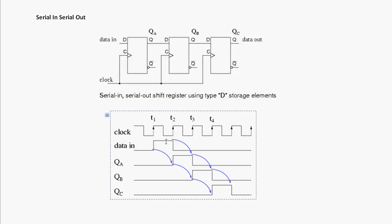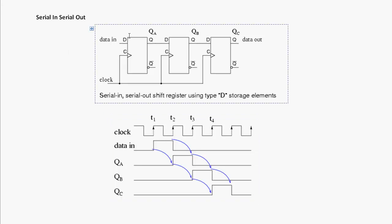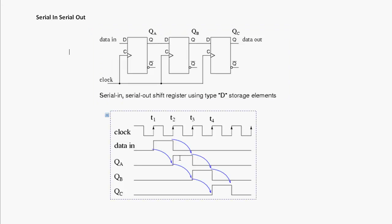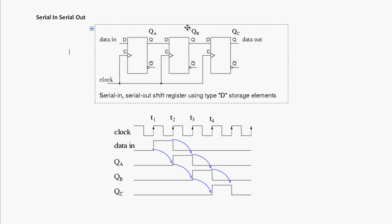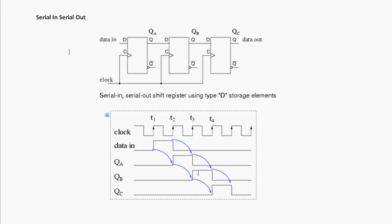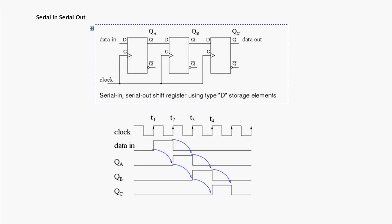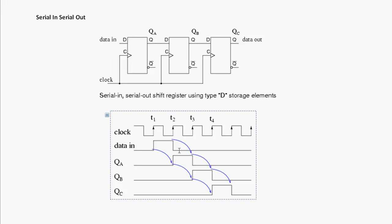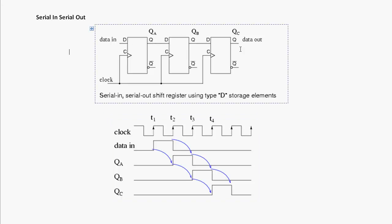On the rising edge of T2, the input bit gets clocked into QA. On the next rising edge, that bit is clocked from QA into QB. Then on the T4 rising edge, the QB data gets clocked all the way over to QC. So to get from data in to data out, it took three clock cycles to travel from the input of the first flip-flop to QC at the third flip-flop.